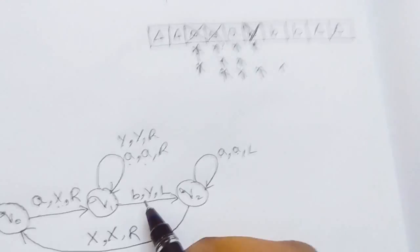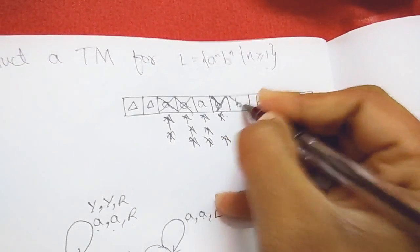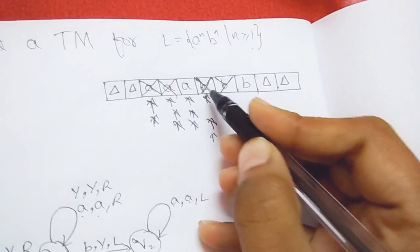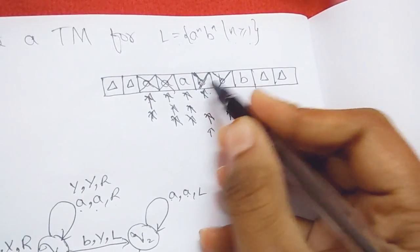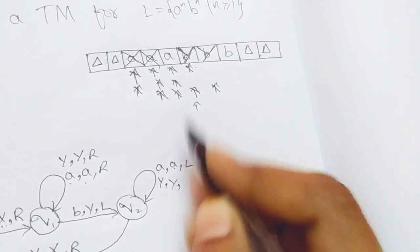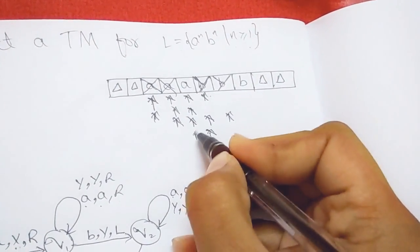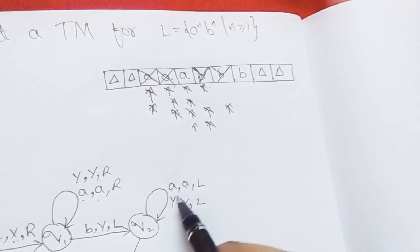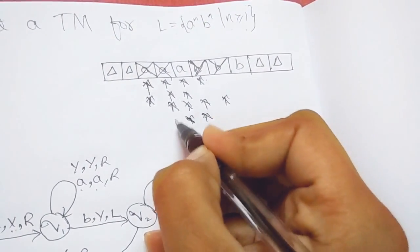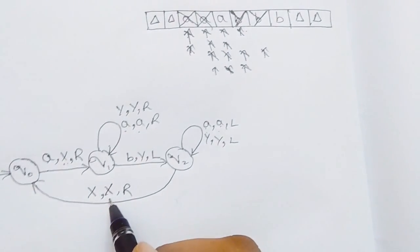The next B is replaced with Y and the header moves left. Moving left, Y is replaced with Y and the header moves left. Again A is replaced with A itself and the header moves left. Continuing left, the header sees X, which is replaced with X and the header moves right.